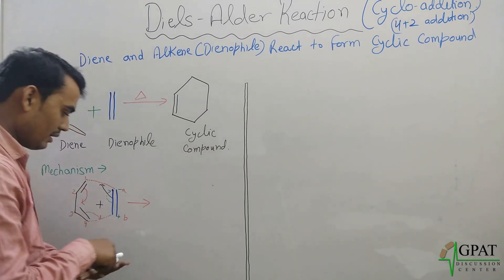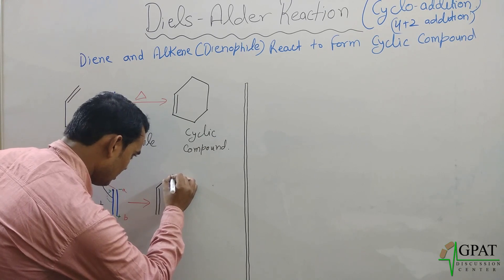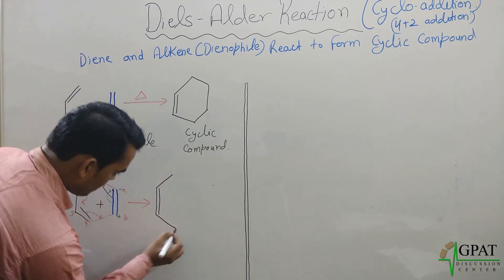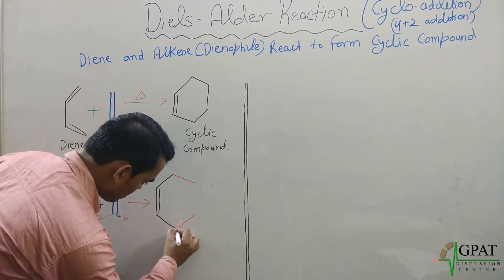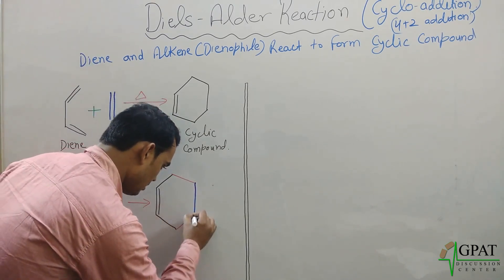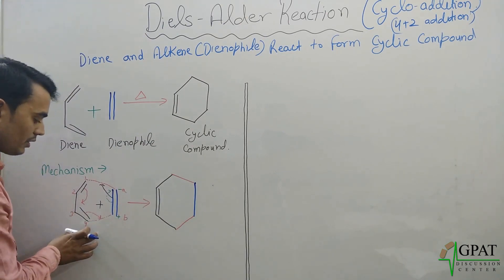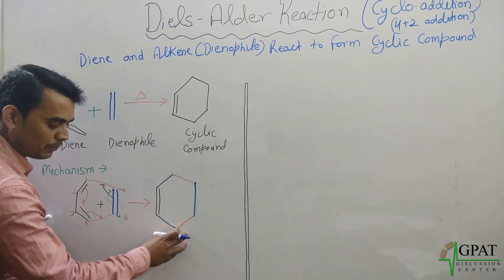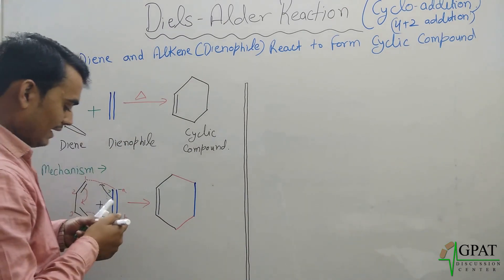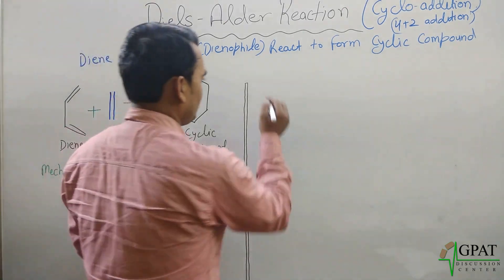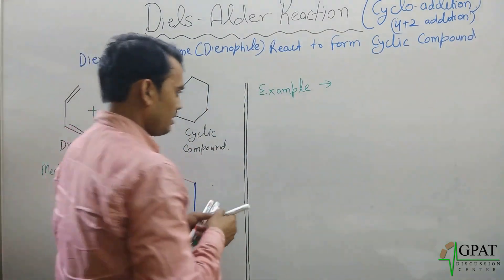After all these bond shifts, the new cyclic compound formed is cyclohexene. The reactants are the diene and the dienophile alkene, and the product is cyclohexene. This completes the mechanism of the Diels-Alder reaction.